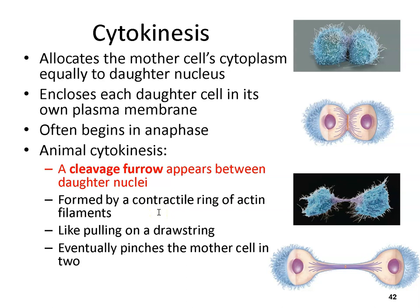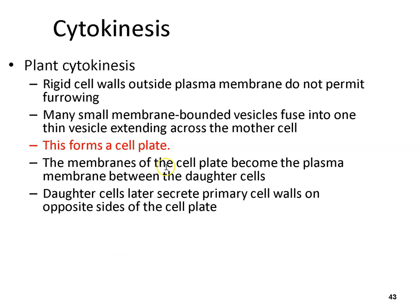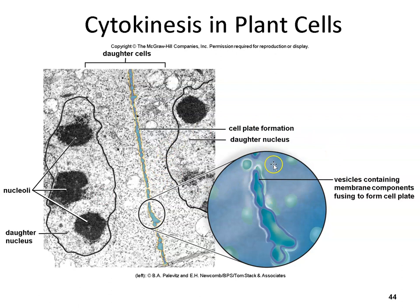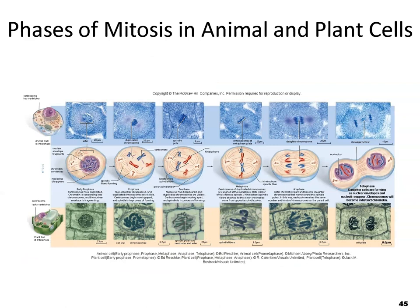Cytokinesis allocates the mother cell's cytoplasm equally to daughter cells and often begins in anaphase. In animal cytokinesis, a cleavage furrow forms with actin filaments involved — it eventually pinches to divide the cell. Something completely different happens in plants: rigid cell walls don't permit furrowing — they would break. Instead, plants form a cell plate. Vesicles containing cell membrane parts line up along that plane, fuse together to form a membrane, and eventually a cell wall forms.